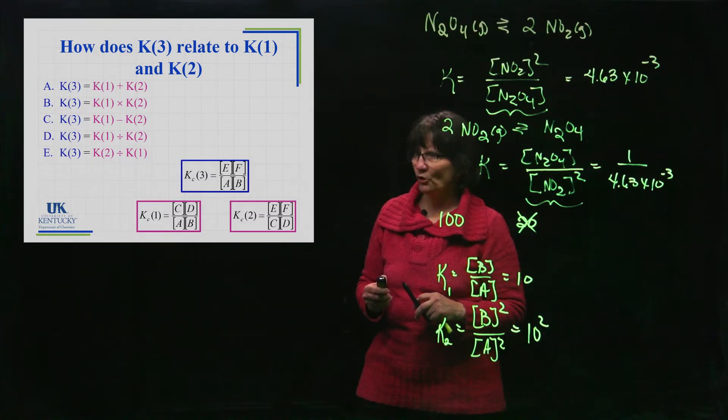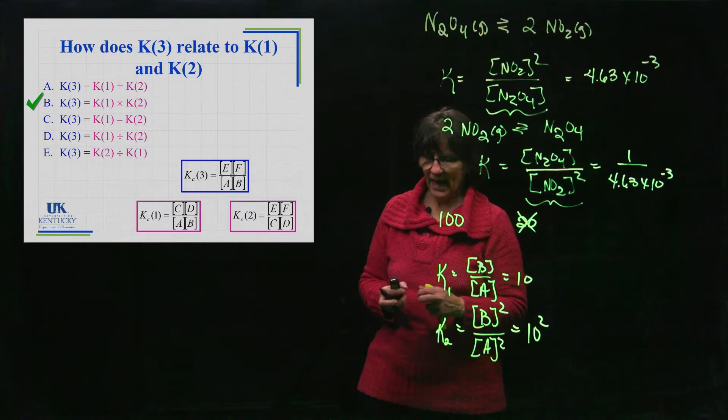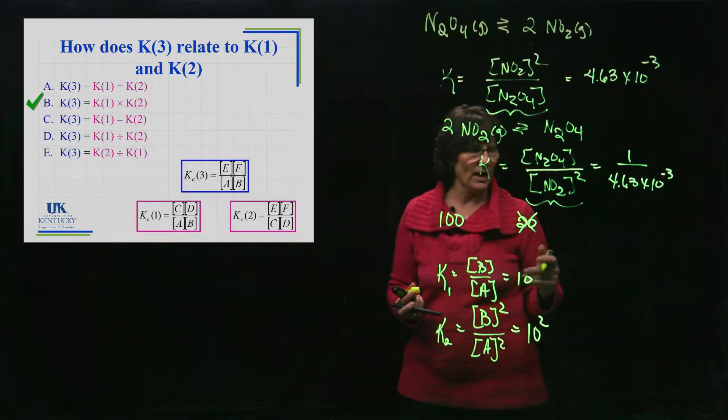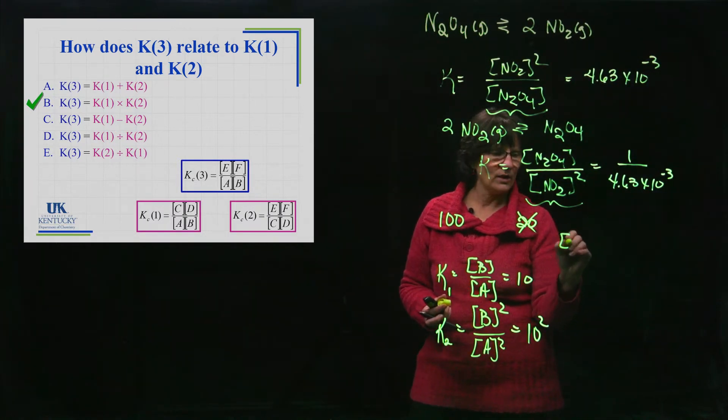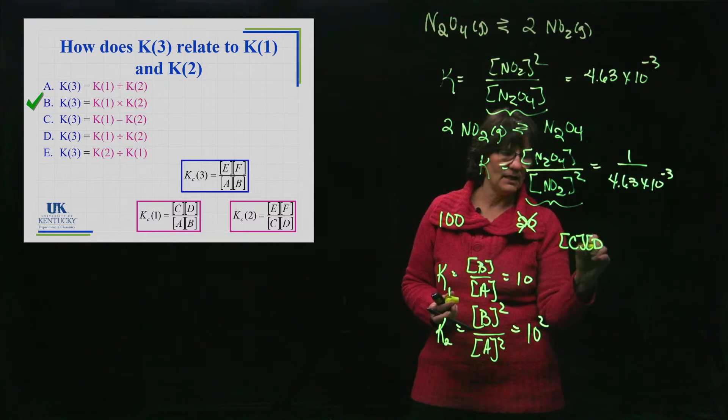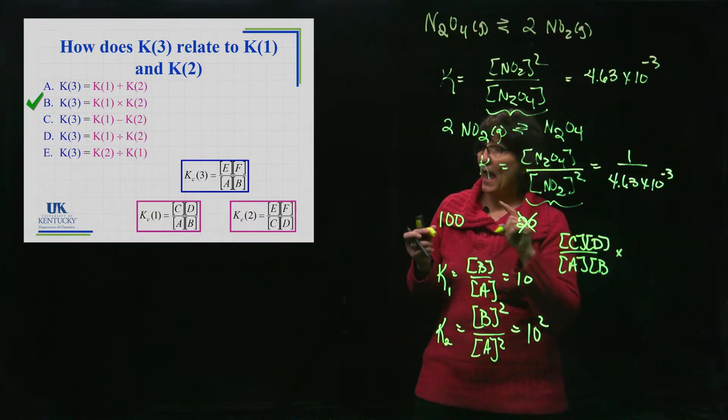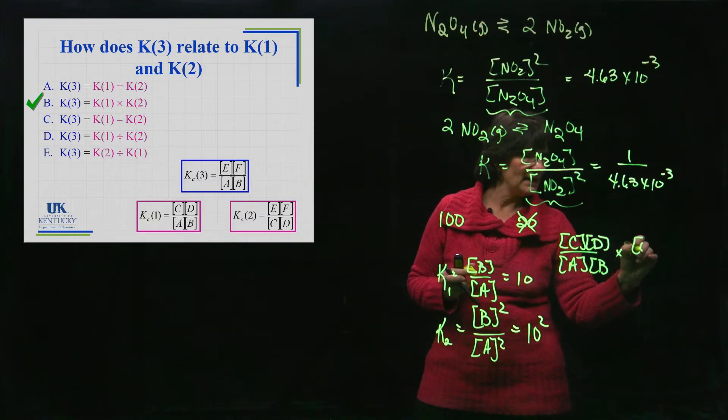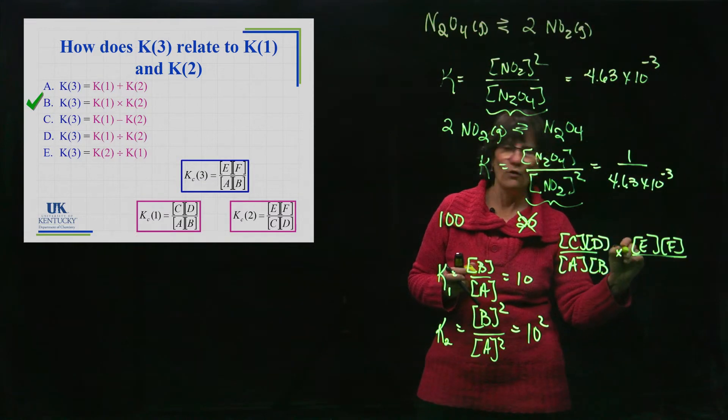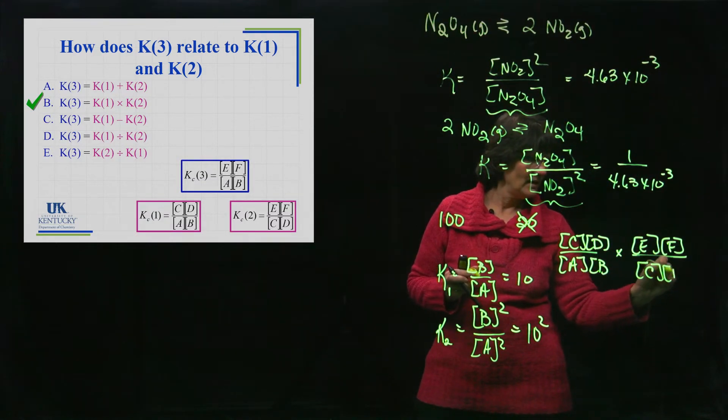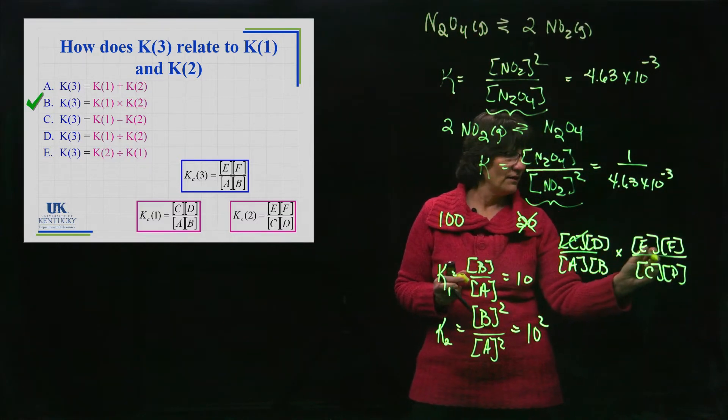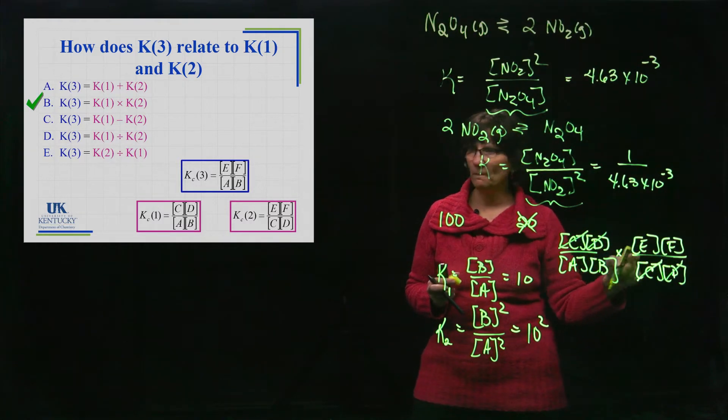Well, hopefully you see it. You multiply them. K1, let's write them out this way so we definitely see it. K1 was C times D over A times B and the other one is E times F over C times D. What's going to cancel? If we multiply these together, the C's are going away, the D's are going away and we're left with EF and AB.